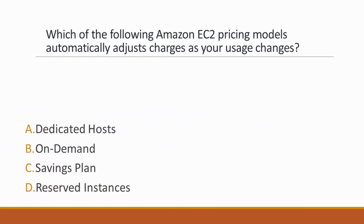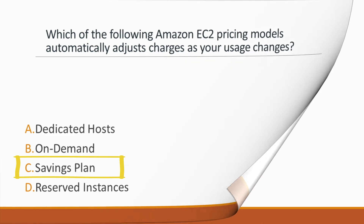Next question: Which of the following Amazon EC2 pricing models automatically adjusts charges as your usage changes? Options: A. Dedicated hosts, B. On-demand, C. Savings plan, D. Reserved instances. Correct answer is option C, Savings Plans, because it is the only Amazon EC2 pricing model that provides the flexibility of adjusting charges depending on the amount of usage, thereby saving money in the process.